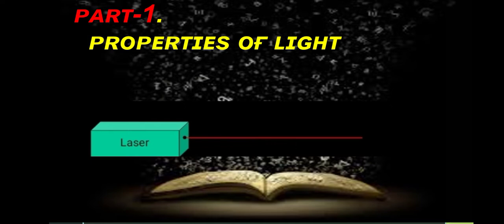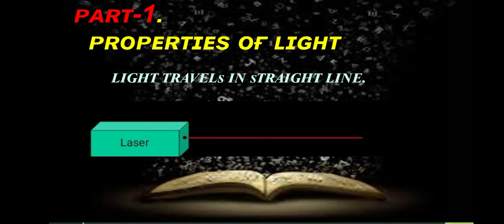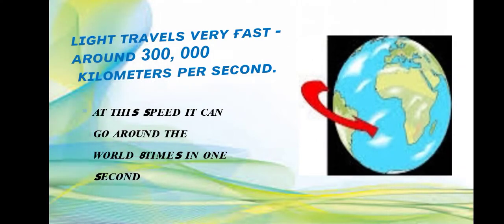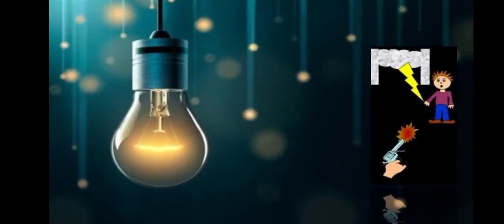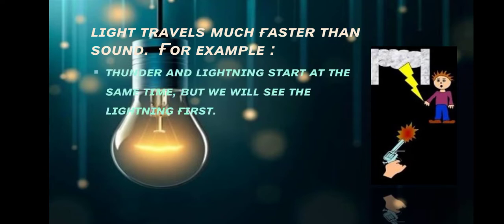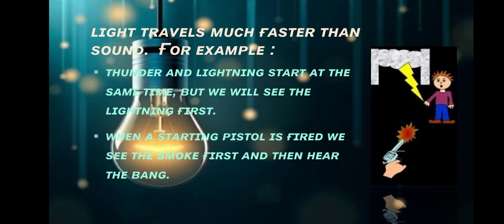Now, what are the properties of Light? Light travels in a straight line. Light travels very fast, around 3 km per second. At this speed, it can go around the world 8 times in 1 second. Light travels much faster than sound. For example, thunder and lightning start at the same time, but we will see the lightning first. When a starting pistol is fired, we see the smoke first and then hear the bang.